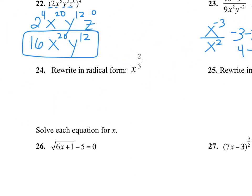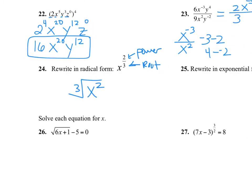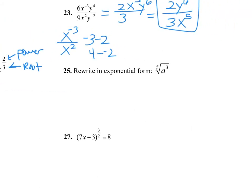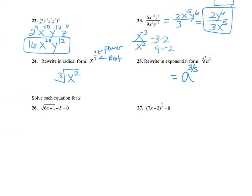Rewrite in radical form: the root goes in the ground on the bottom, and the power goes on top. So x to the 2/3 would be the cube root of x squared. Exponential form: 5 is the root and 3 is the power, so this is a to the 3/5.